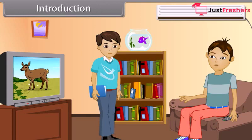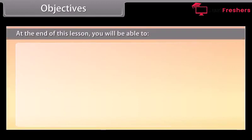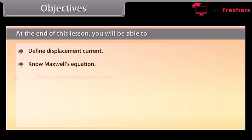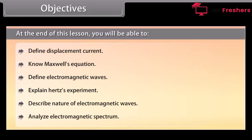It's really interesting to know about that fact and I want to know more about this. Students, today we will study more about electromagnetic waves. At the end of this lesson, you will be able to: define displacement current, know Maxwell's equations, define electromagnetic waves, explain Hertz experiment, describe the nature of electromagnetic waves, and analyze the electromagnetic spectrum.